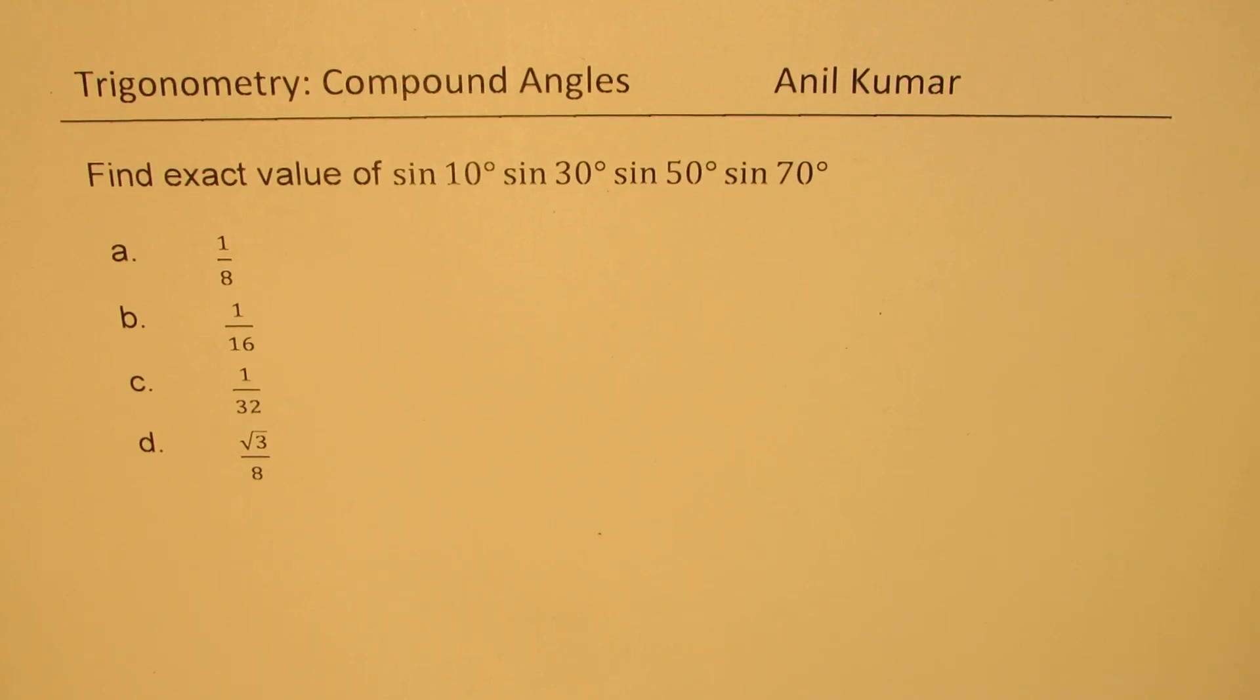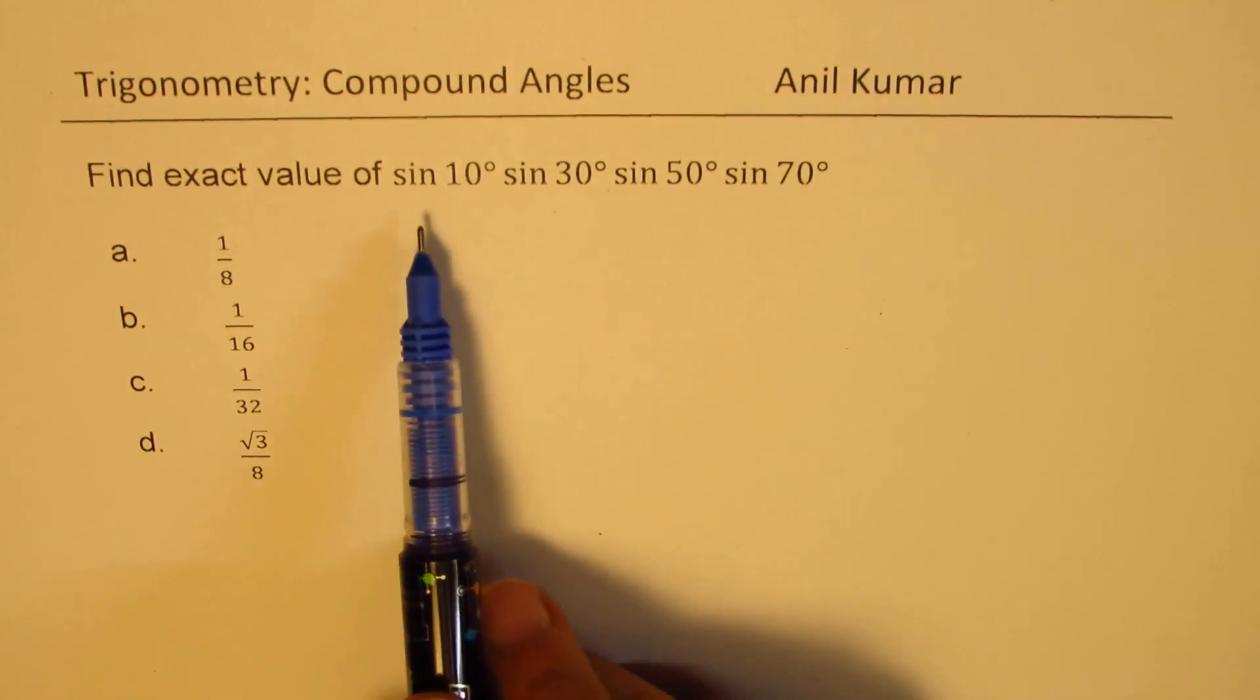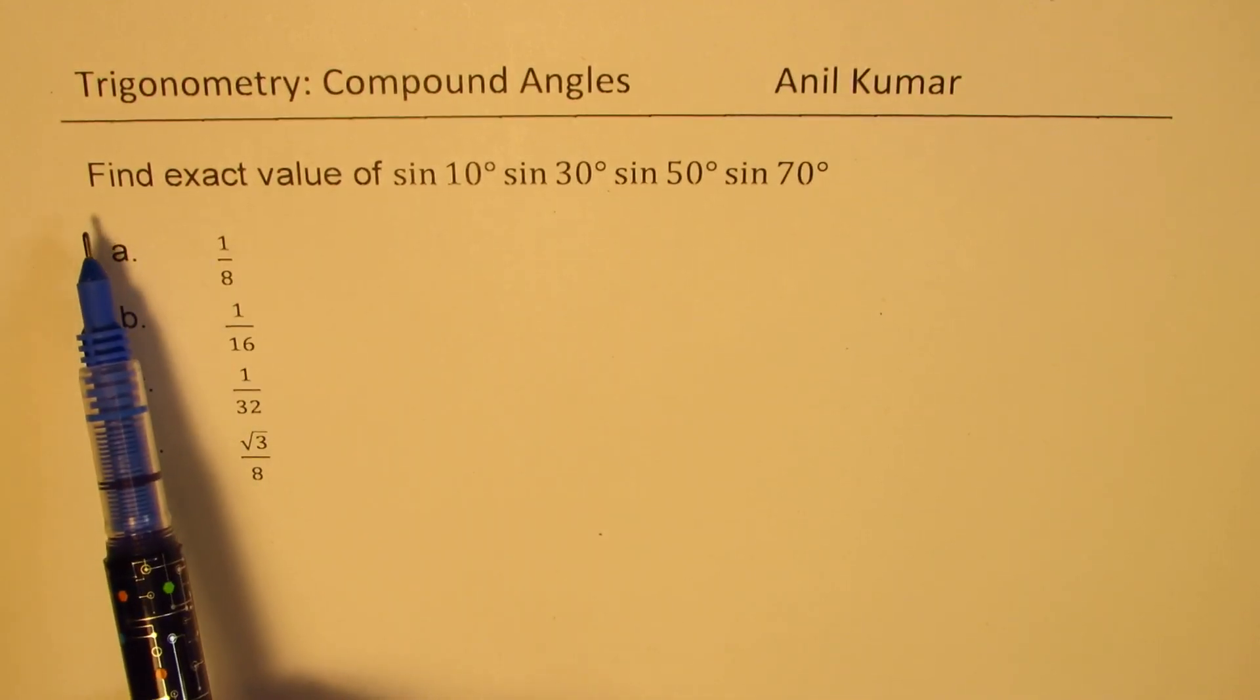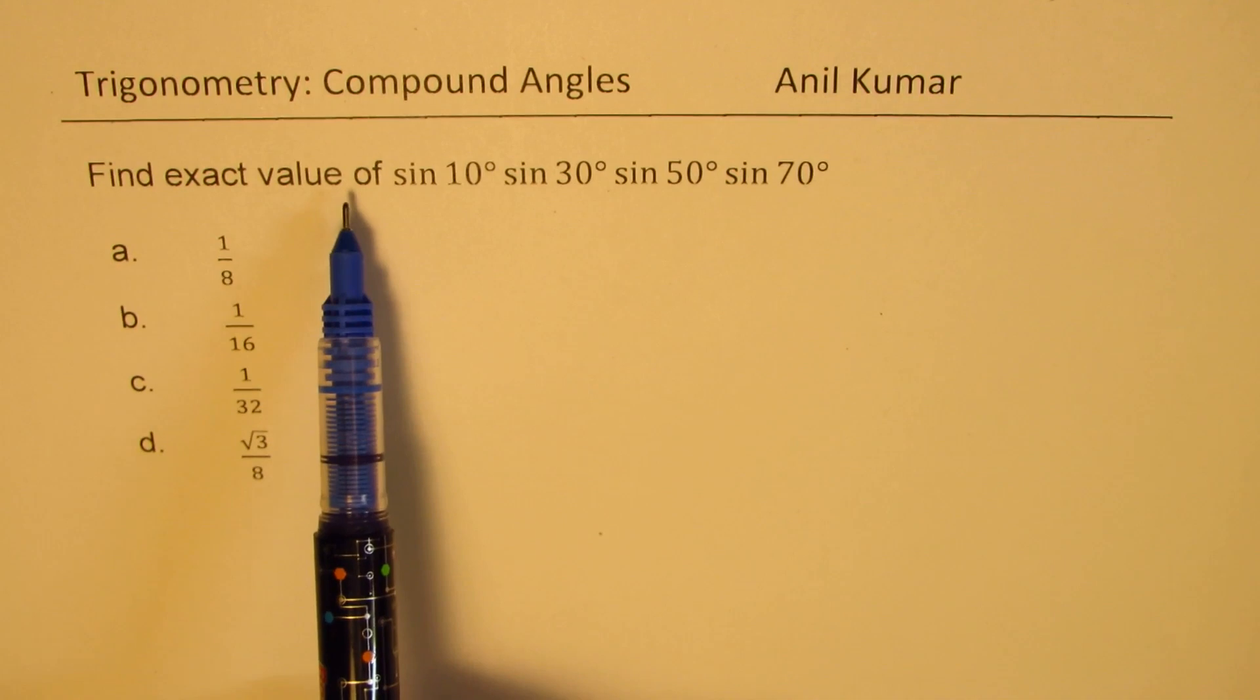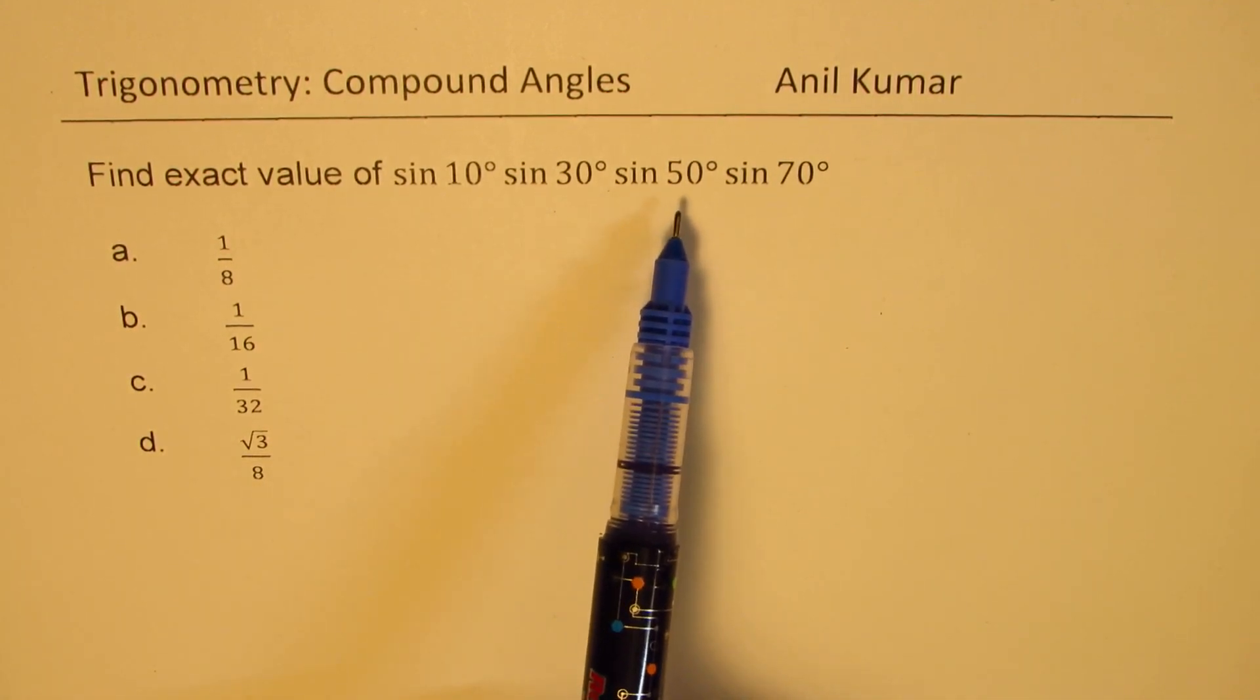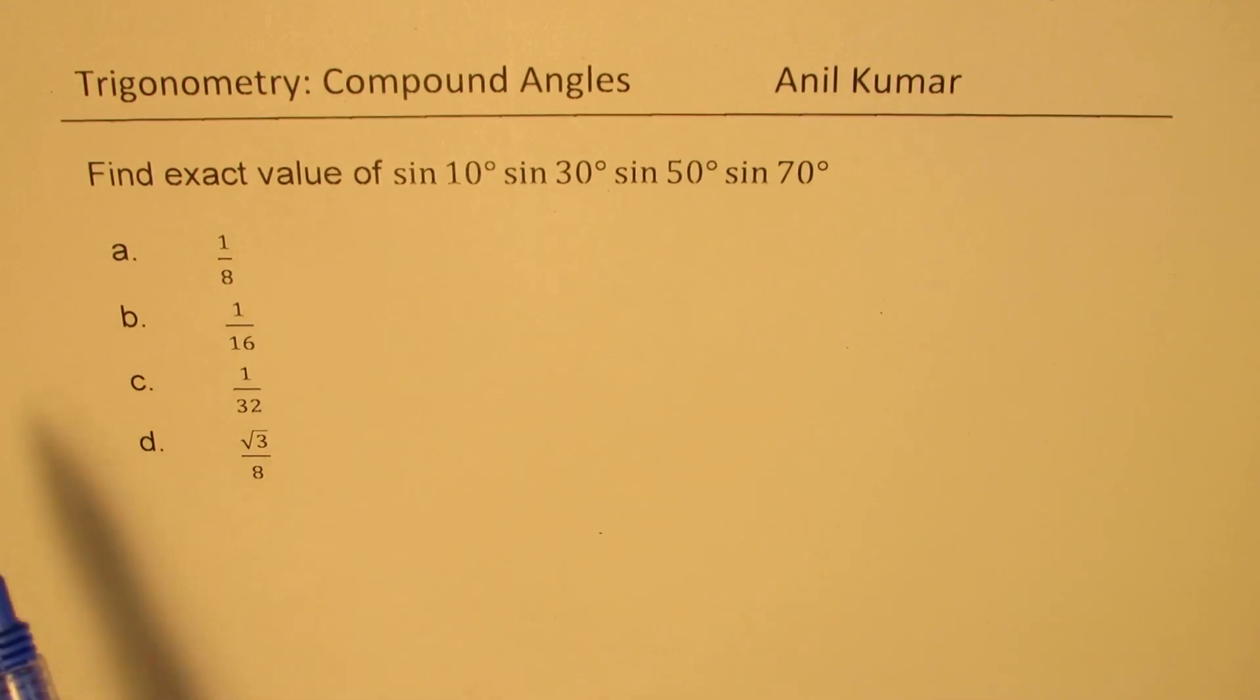I'm Anil Kumar. Welcome to my series on trigonometry. We have an excellent question here. In one of my videos, I have a similar question with cosines. The question here is find exact value of sine 10 degrees times sine 30 degrees times sine 50 degrees times sine 70 degrees. We have four options.